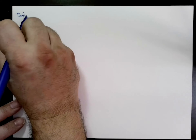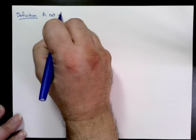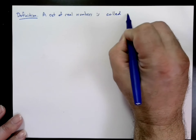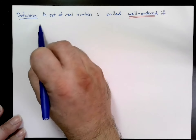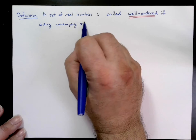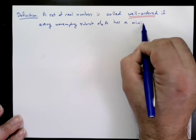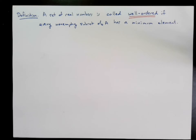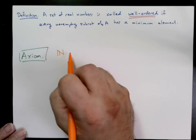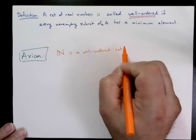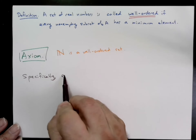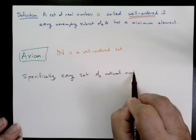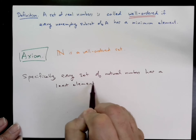We say that a set of real numbers is well-ordered if every non-empty subset has a minimum element. We take as an axiom that the natural numbers is a well-ordered set — specifically, that every set of natural numbers has a least element. When one constructs the natural numbers from the basics of set theory, one can show they are well-ordered; in some sense the natural numbers are constructed to have this property. So let us just take as an axiom that the natural numbers are well-ordered, meaning any set of natural numbers has a least element.